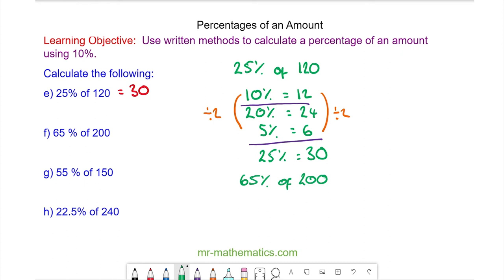For question f, 65% of 200, we can work out 10% as 20. 5% will be half of that which is 10. And the 60% we can work out by 10% times 6. And 20 times 6 is 120. So 65% will be equal to 130.